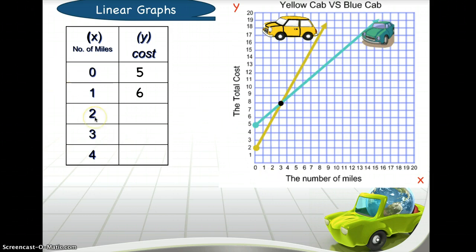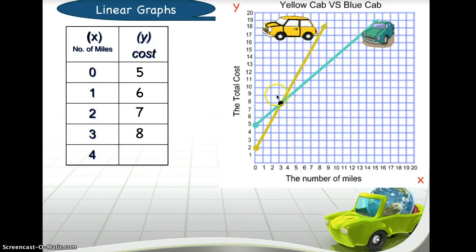At two miles on the x-axis, moving up to the y-axis, the value is seven — seven dollars. At three miles the y-axis value is eight. At four miles, moving horizontally, the value is nine dollars. So these are the number of miles and this is how much you pay the blue cab.